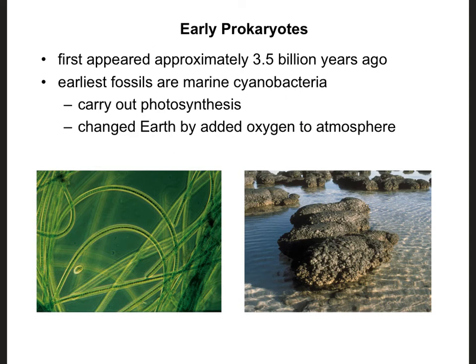So when did life actually evolve? The first prokaryotes appeared approximately 3.5 billion years ago. We know this because we have fossils — rocks called stromatolites, found in Australia — which are fossilized bacterial colonies that lived 3.5 billion years ago. These first prokaryotes were called cyanobacteria, and they carried out photosynthesis. They changed the Earth by adding oxygen to the atmosphere, meaning that we could not have evolved unless these organisms were here before us to oxygenate the atmosphere.